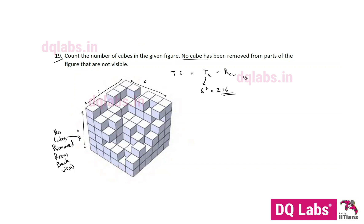Minus RC, which is the removed cubes. We'll start counting the removed cubes by considering different levels and then add all of them up. For each level, we count the number of missing cubes, then add them all up later. We'll call them levels: level one, two, three, four, five, and six.